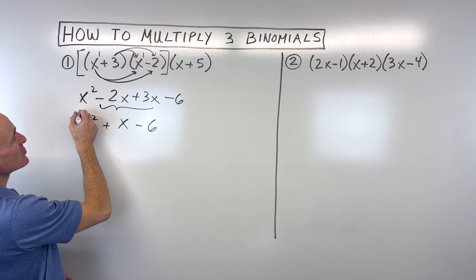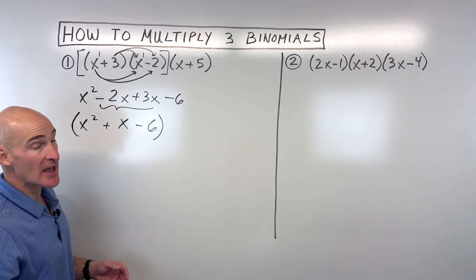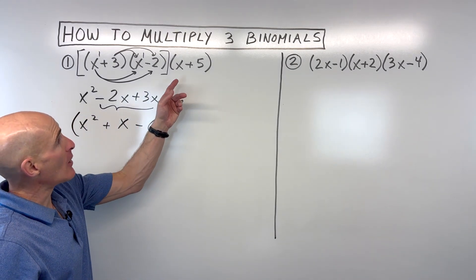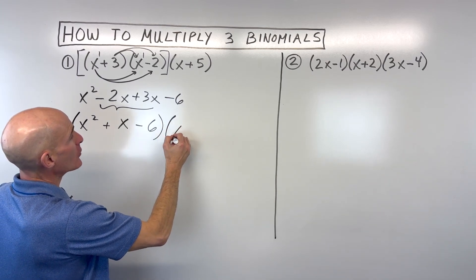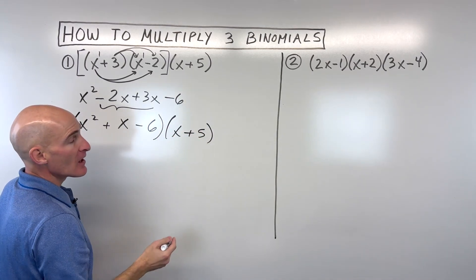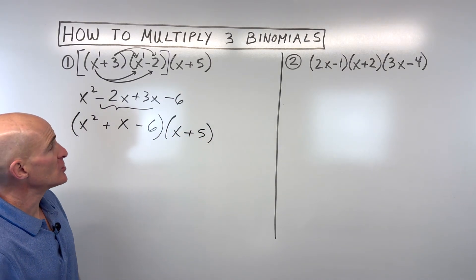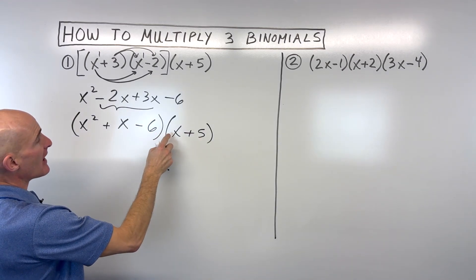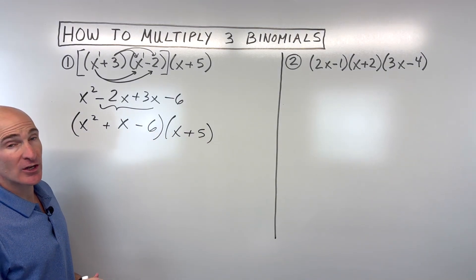Okay, so now we multiplied these first two binomials together, and we've got a trinomial. Now we want to multiply it by this binomial here, x plus five. Now, you can do this a couple different ways. You could take x times all three of these, and then five times all three of these. That's one way to do it.